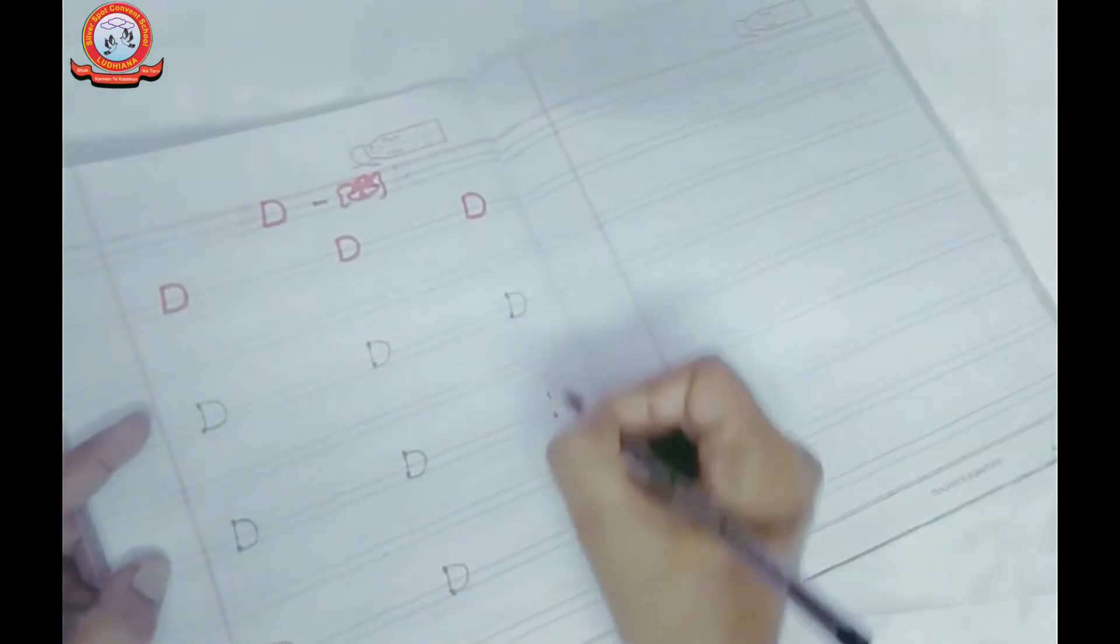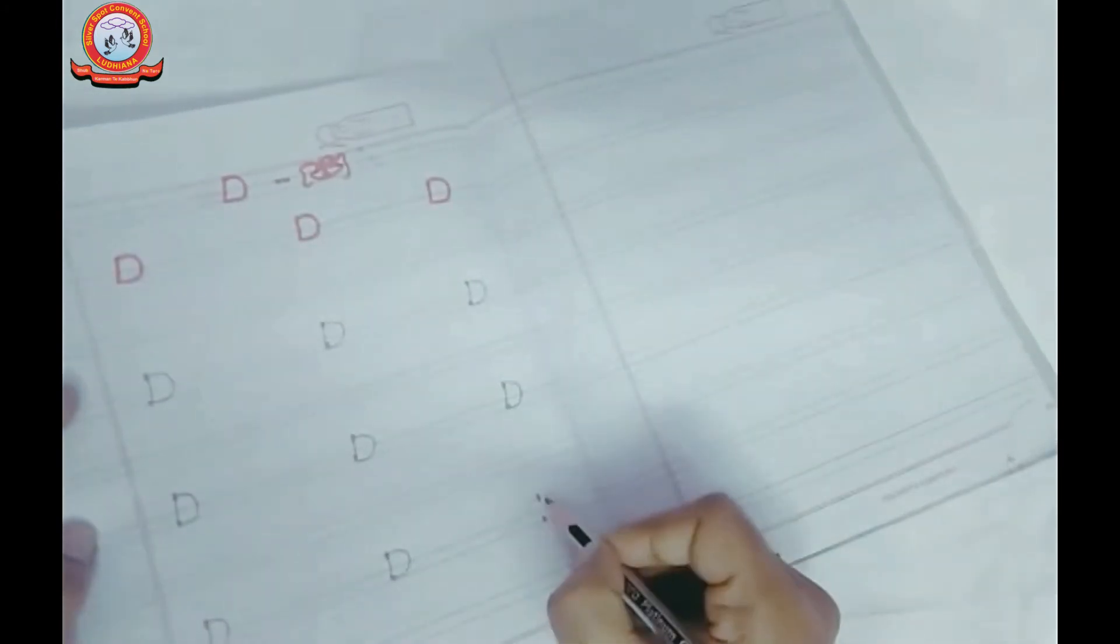Speak and write. Okay? जब भी हमने लिखना है, हमने speaking जरूर करनी है. तभी हमें पता चलेगा कि हम यह letter D लिख रहे हैं. Okay?